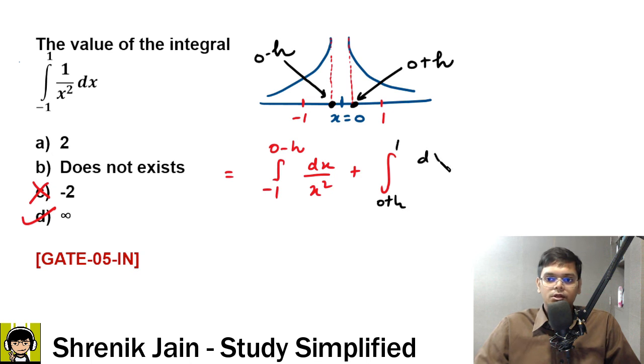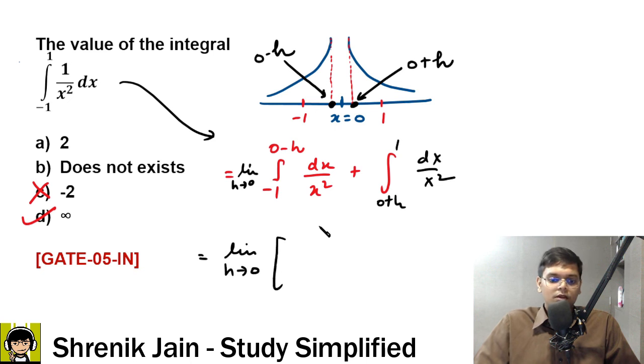0 plus h to 1, dx upon x squared. This is my integration, okay, where limit h tends to 0. Now, limit h tends to 0. Integral 1 upon x squared is minus 1 by x. Minus 1 by x, upper limit minus h, lower limit minus 1, plus integral of this thing is again minus 1 by x, upper limit 1, lower limit h.